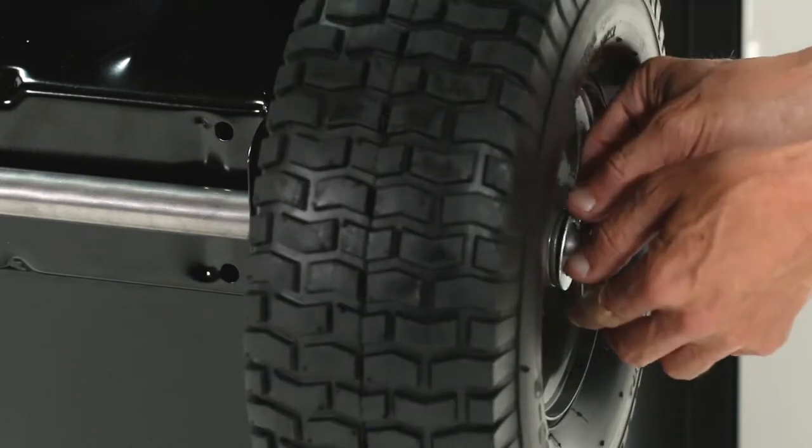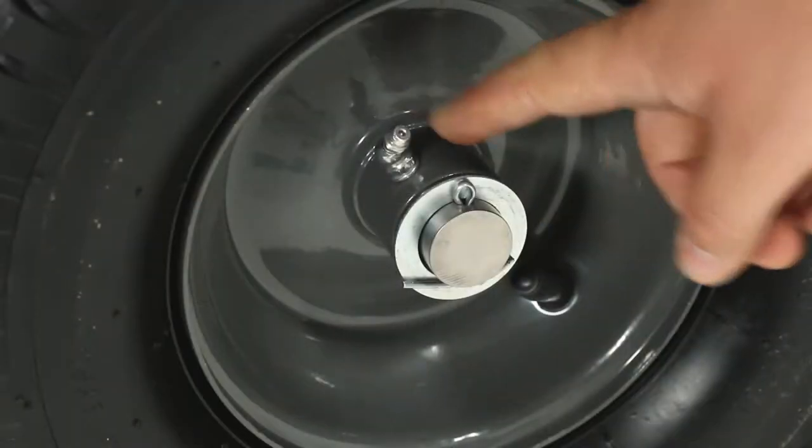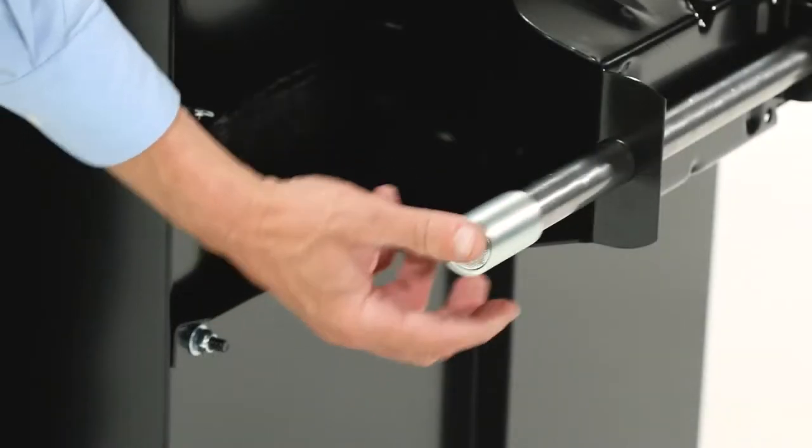Next, insert a cotter pin, then spread out the ends to secure it. Now, pump grease into the fittings until it is forced out through the hub. Next, repeat for the other wheel.